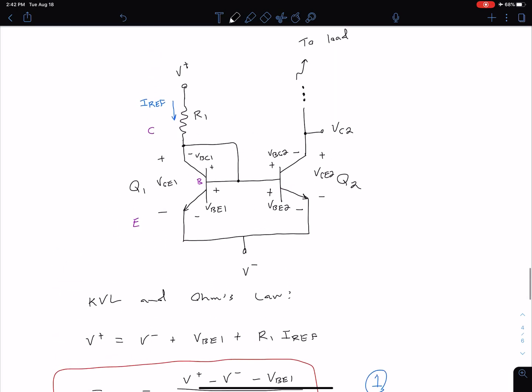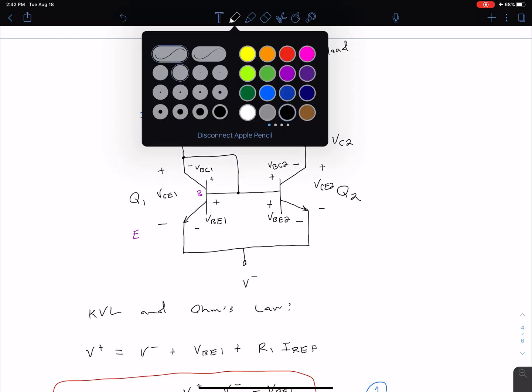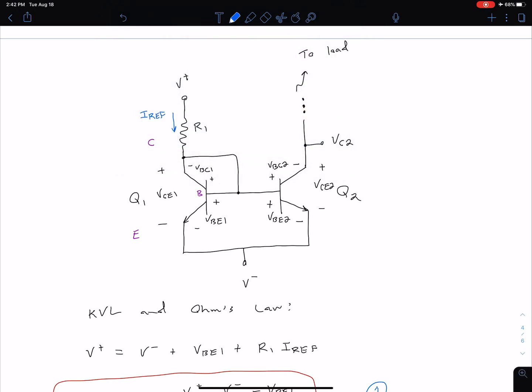What we're really interested in is the current going to the load. We can see the current going to the load—we can call this our collector current for Q2, so we can call this IC2, or we could just call it I0, our output current. Really we want to figure out what that is. How do we relate from IRef to I0?